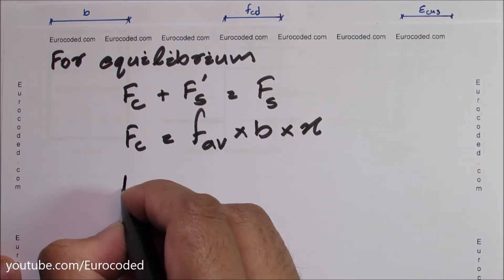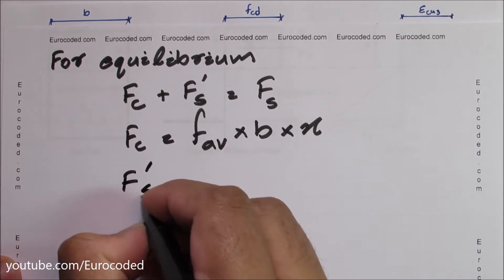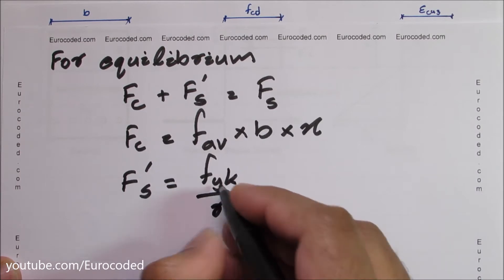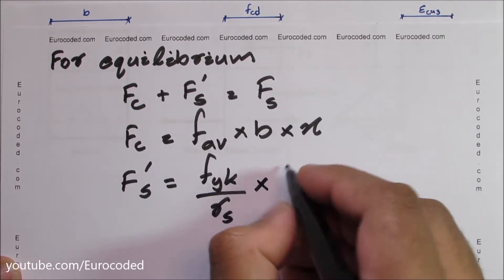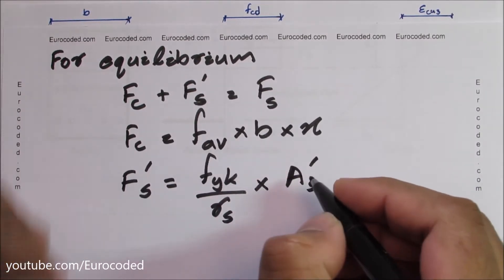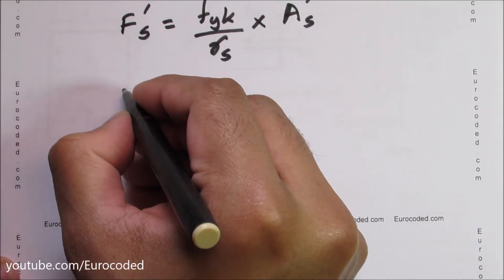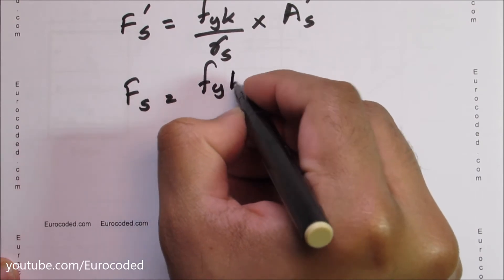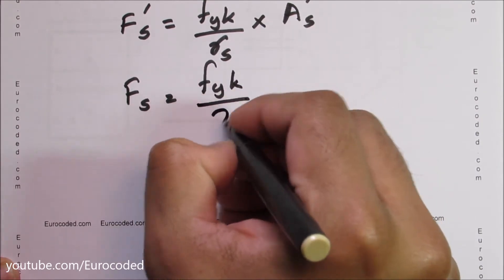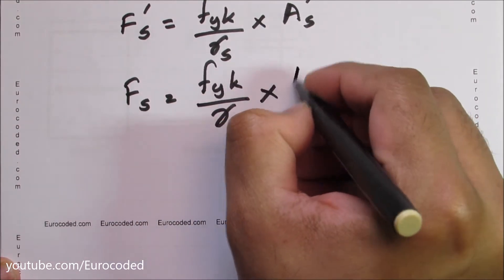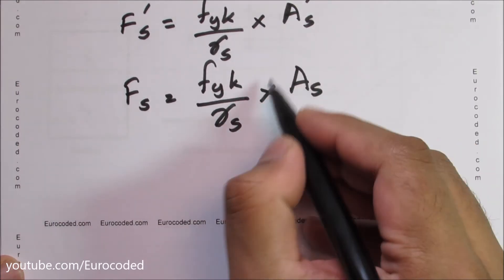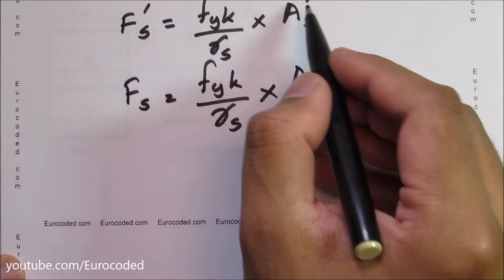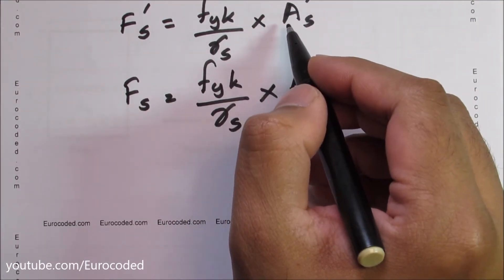We can write FS is equal to FYK over γS times AS. Similarly, F'S is equal to FYK over γS times A'S, where AS is the area of tensile reinforcement and A'S is the area of compression reinforcement.